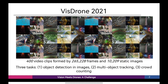Note that the dataset was collected using various drone platforms with different models, in different scenarios, and under various weather and lighting conditions. These frames are manually annotated with more than 2.6 million bounding boxes or points of targets of frequent interest, such as pedestrians, cars, bicycles, and tricycles. Some important attributes including scene visibility, object class, and occlusion are also provided for better data utilization. We invite researchers to participate in the challenge, to evaluate and discuss their research at the workshop, as well as to submit papers describing research, experiments, or applications based on the VisDrone 2021 dataset.